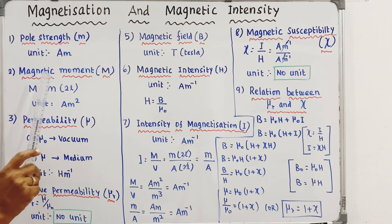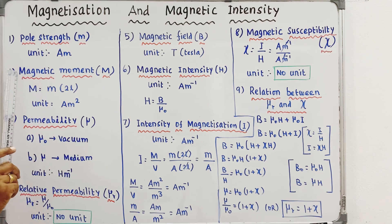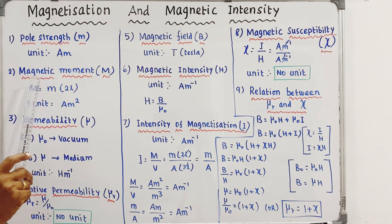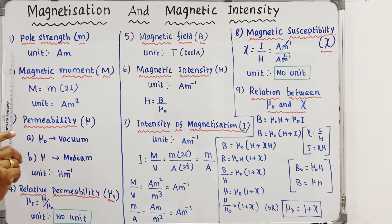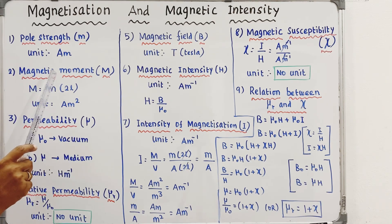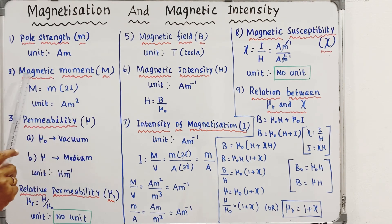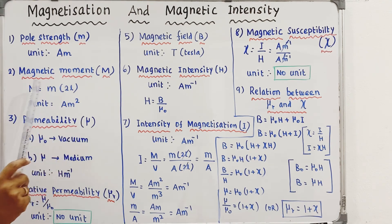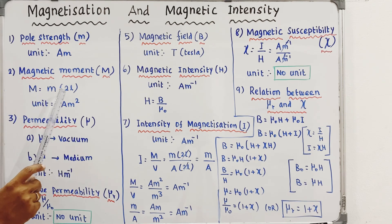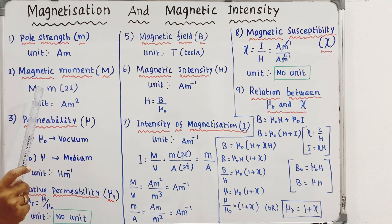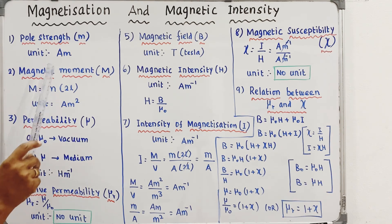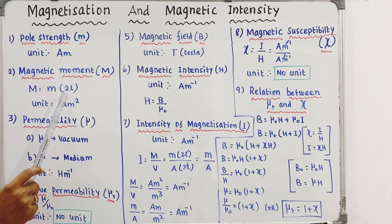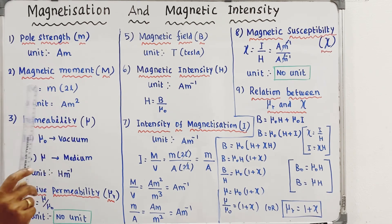Next is magnetic moment or magnetic dipole moment. If you have a magnet, you don't have a monopole — you always have a dipole. That is the magnetic moment, represented by capital M. The pole strength multiplied by the magnetic length gives the magnetic moment. The magnetic length is L, so the full length is 2L. The unit of magnetic moment is Ampere meter squared.